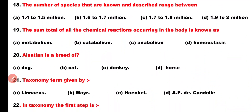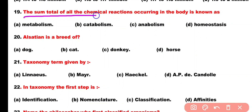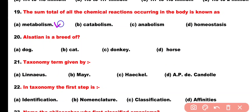Question number 19. The sum total of all the chemical reactions occurring in the body is known as: Option A: Metabolism, Option B: Catabolism, Option C: Anabolism, Option D: Homeostasis. Correct answer is Option A: Metabolism.